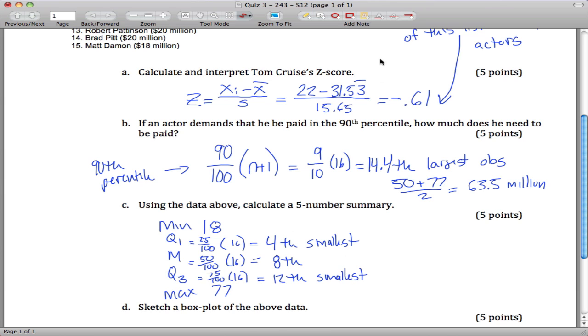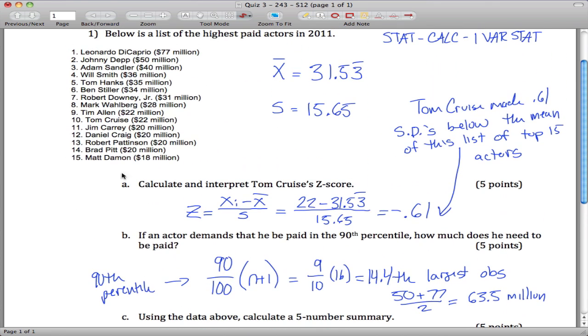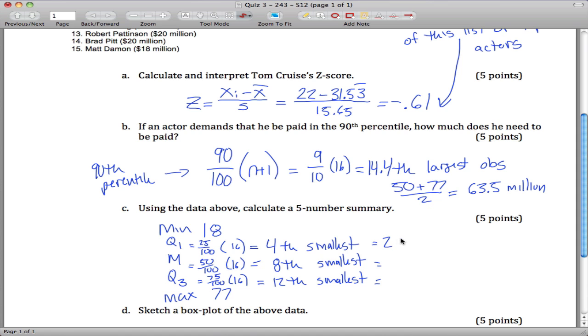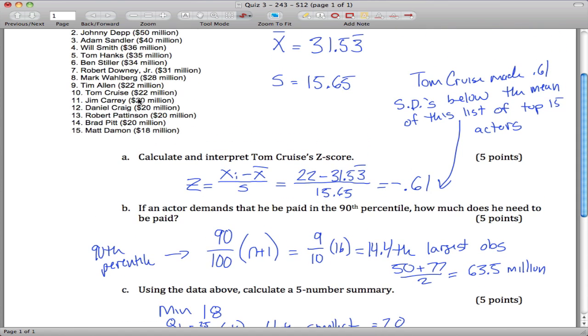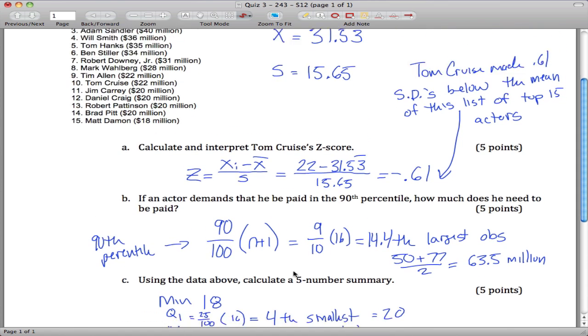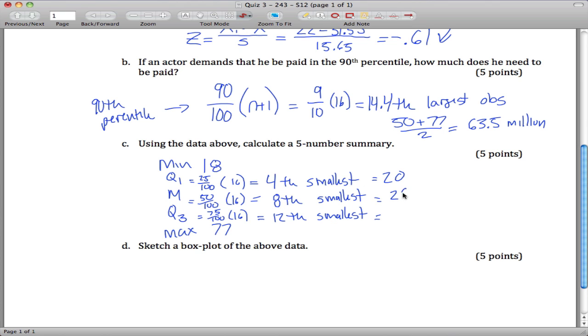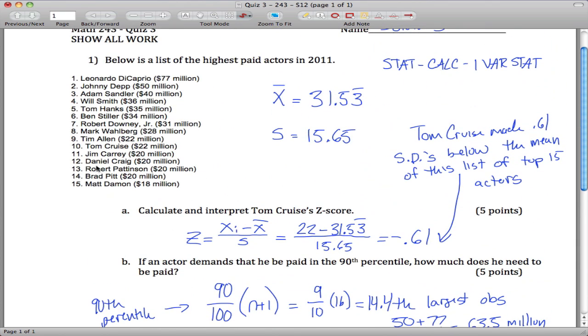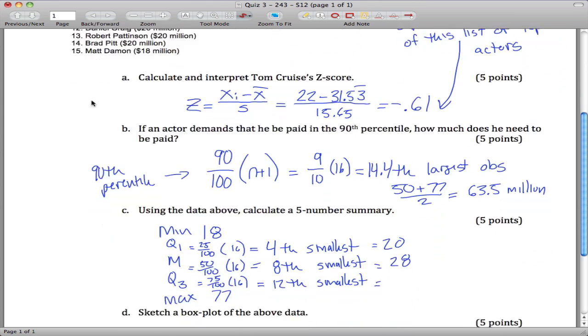We can get all those just by looking up at our list. Counting through, the fourth is 20 million, the eighth is 28 million, and the 12th was 36 million.